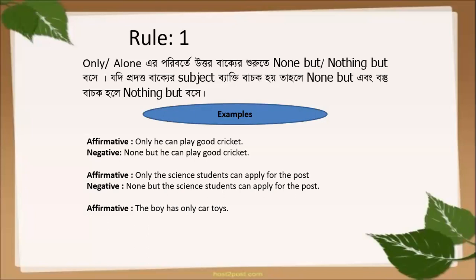Another example: 'The boy has only car toys.' Here 'only' is used before an object — that is 'car toys'. Since car toys is a thing, we have to put 'nothing but'. So the answer is: 'The boy has nothing but car toys.' If you practice at home, this rule will be very easy to solve for you.